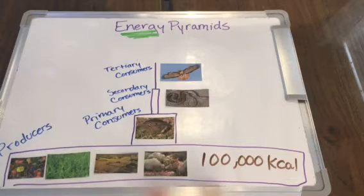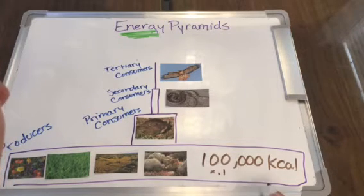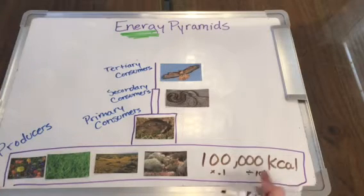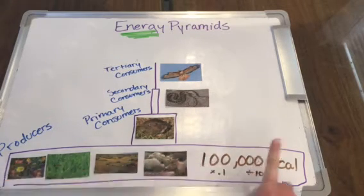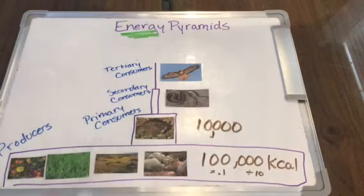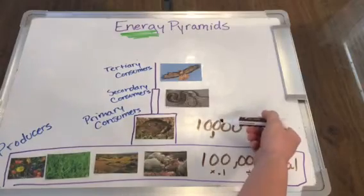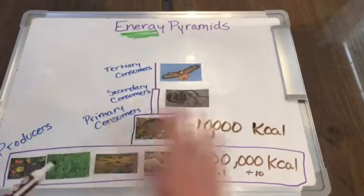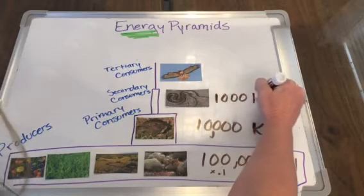If in the producer level there is 100,000 kilocalories of energy, then the next level up is just a tenth of the size. You would either multiply by 0.1 or divide by 10. So if we divide by 10 — that's the same as taking off a zero — you're going to have 10,000 kilocalories on this level.